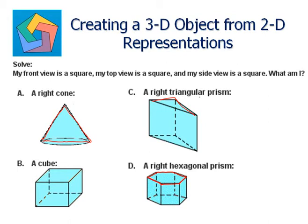Let's look at the cube now. The front view here is a square, top view is a square, and if you look at the sides also, it's also a square. The other side is also square. So we can say B, a cube, is the answer.